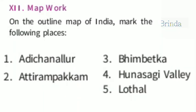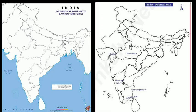Now shall we do some map work? On the outline map of India, mark the following places: Adichanalur, Athiram Pakkam, Bimbikita, Hunasagi Valley, and Lothal. You can mark these places. See nicely and you can get good marks. I hope all of you understood. Thank you.